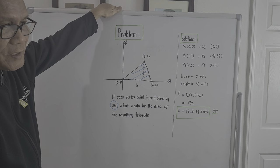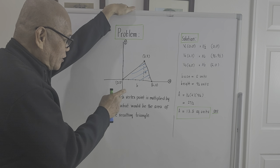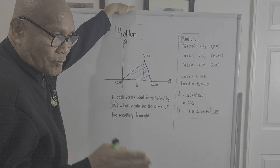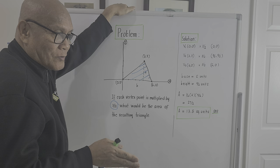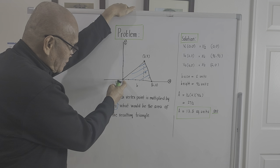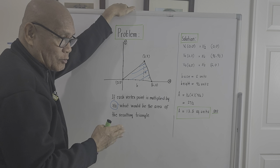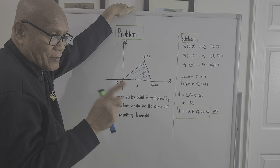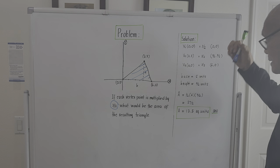There's a little issue with the logic of the problem. If each vertex point is multiplied by three halves, meaning the coordinates of the three vertices are to be multiplied by three halves, what will be the area of the resulting triangle? Of course, if we multiply the coordinates, the triangle will grow — it will get bigger.